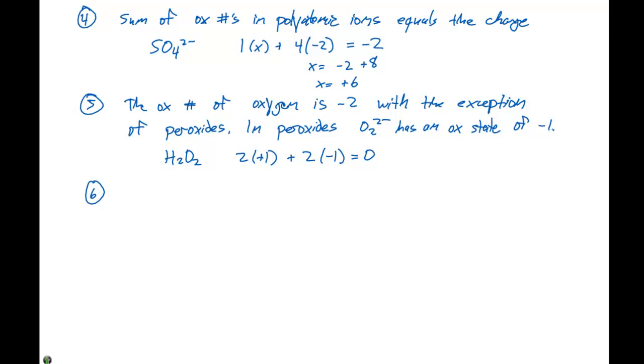Rule number 6 is the oxidation number of hydrogen is plus 1, except when it is combined with a metal. So in all cases, with the exception of when it's combined with a metal, we have hydrogen having an oxidation number of plus 1. An example of the exception would be NaH, where sodium has an oxidation state of plus 1, and hydrogen has an oxidation state of minus 1.